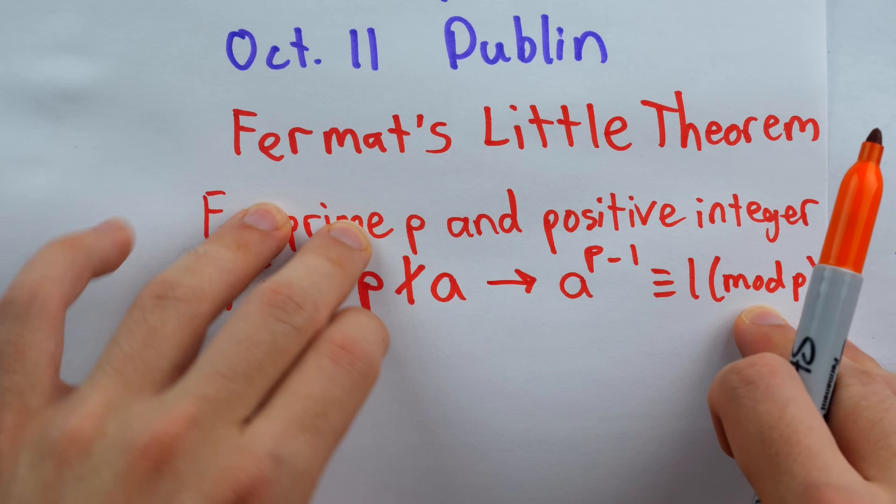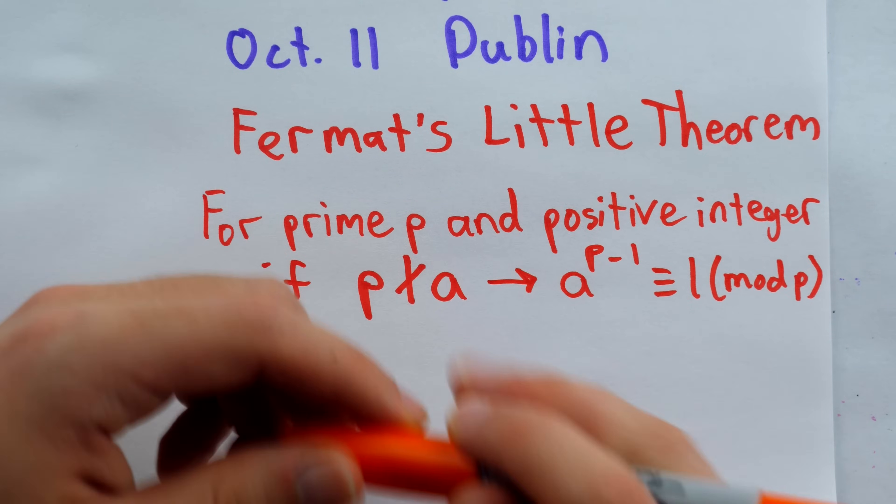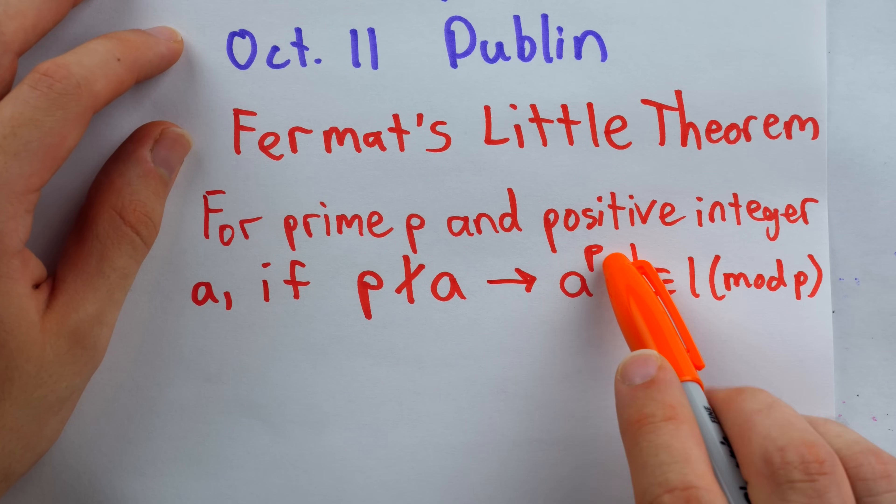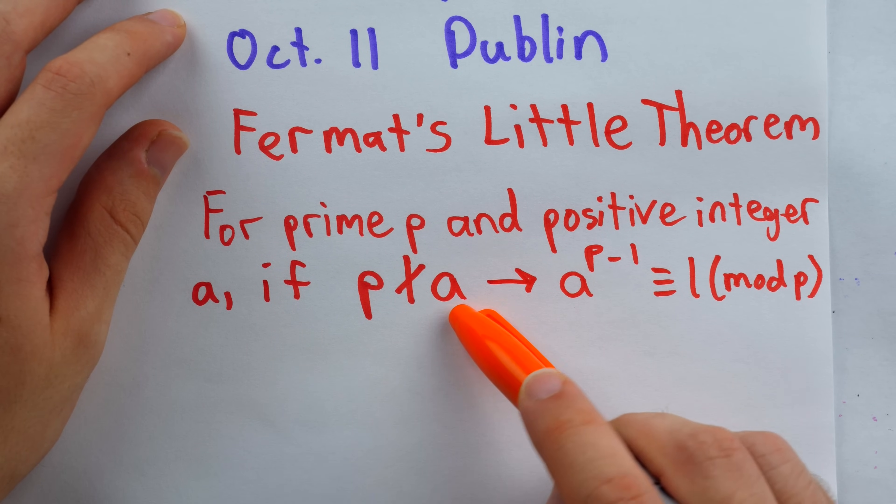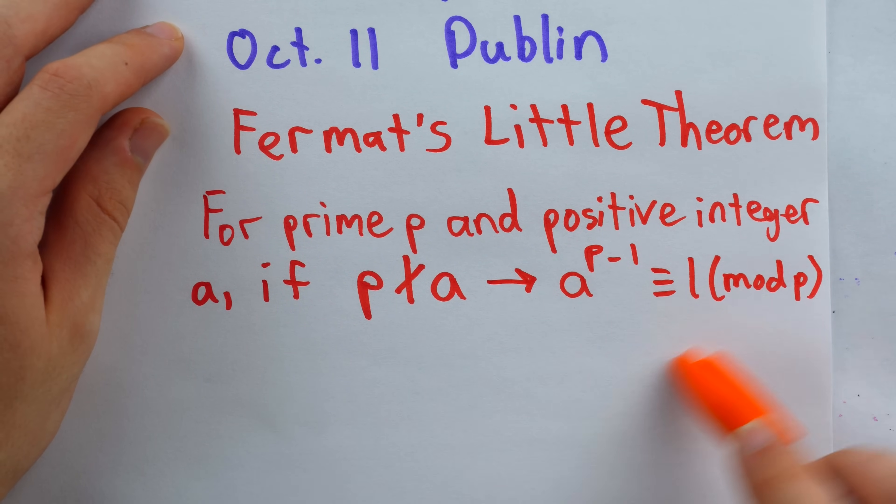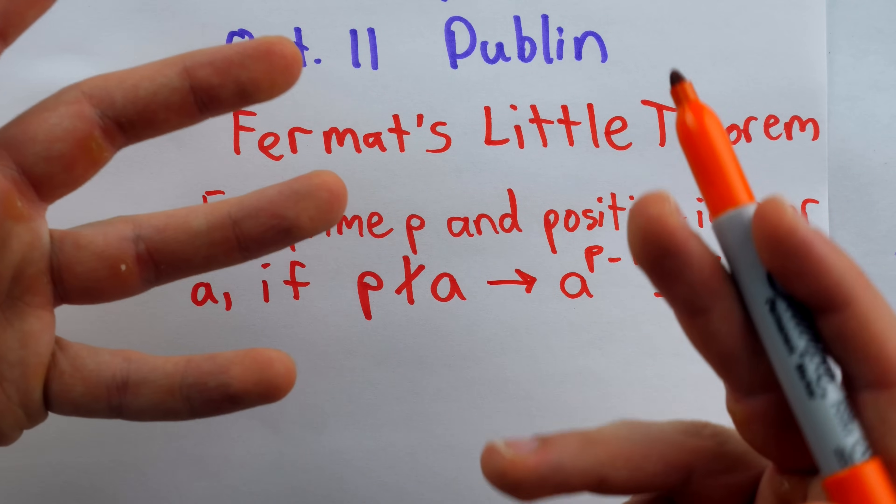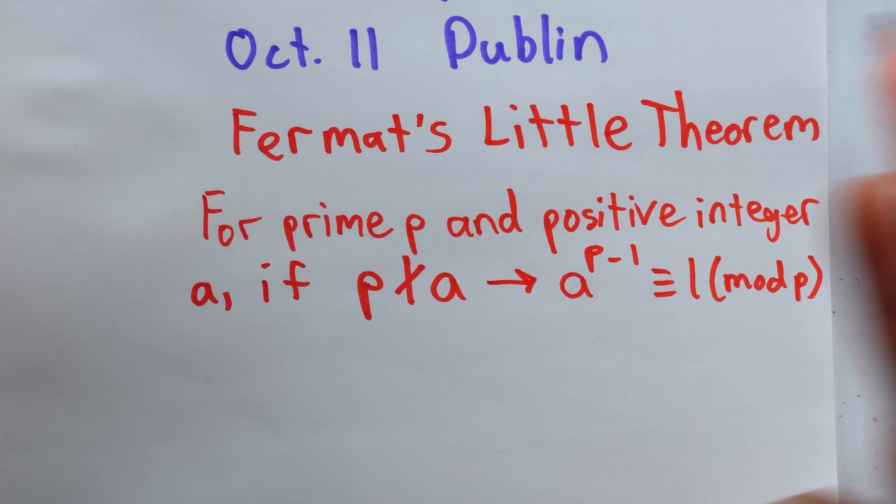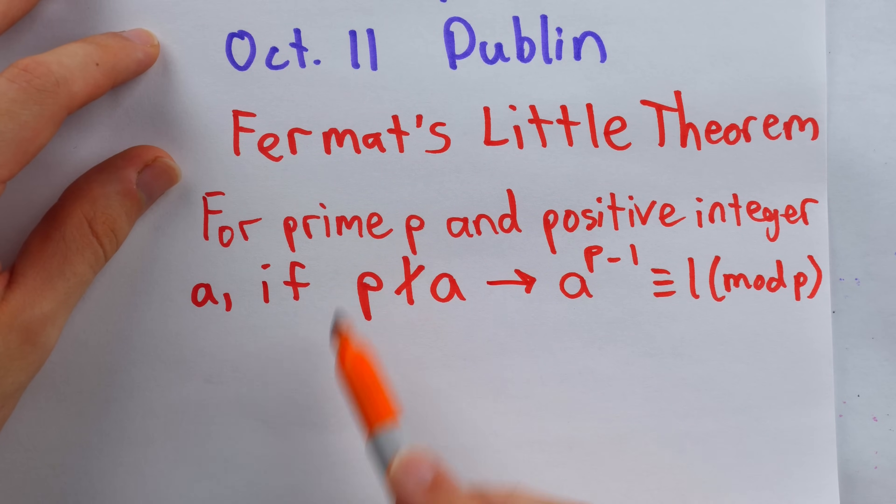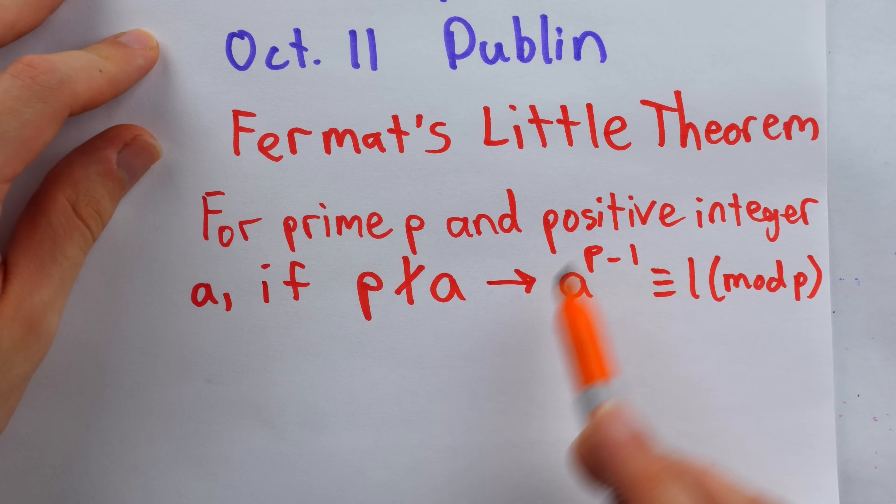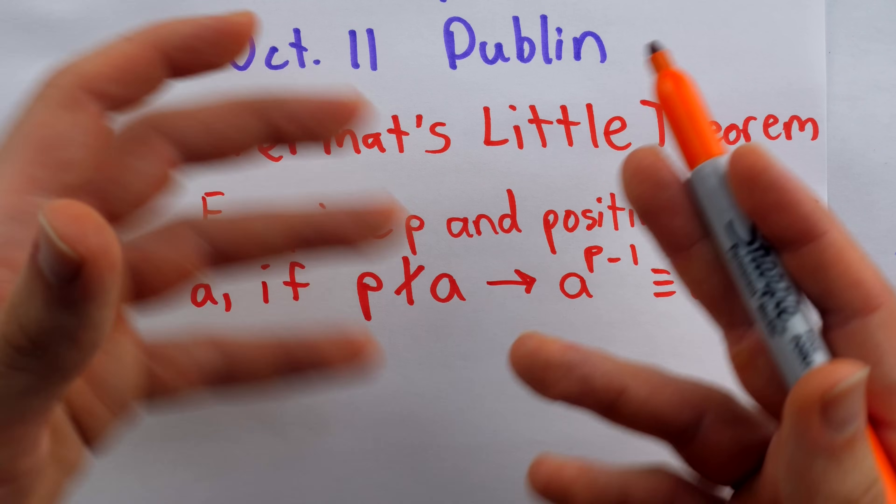It might be true, but it's unlikely to be true when p is composite. So if you took a composite p and then some number a that p didn't divide, then this is just unlikely to be true in that situation for a composite number. And so that's the probabilistic test. If a random a is chosen that's not divisible by p and this relationship does hold, then there's a good chance that p is prime.